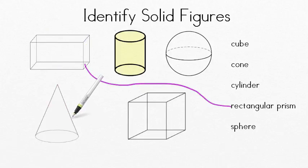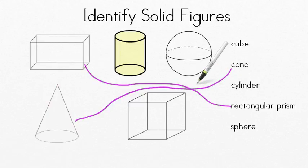What shape do we have here? If you said cone, pat yourself on the back. You're right again.